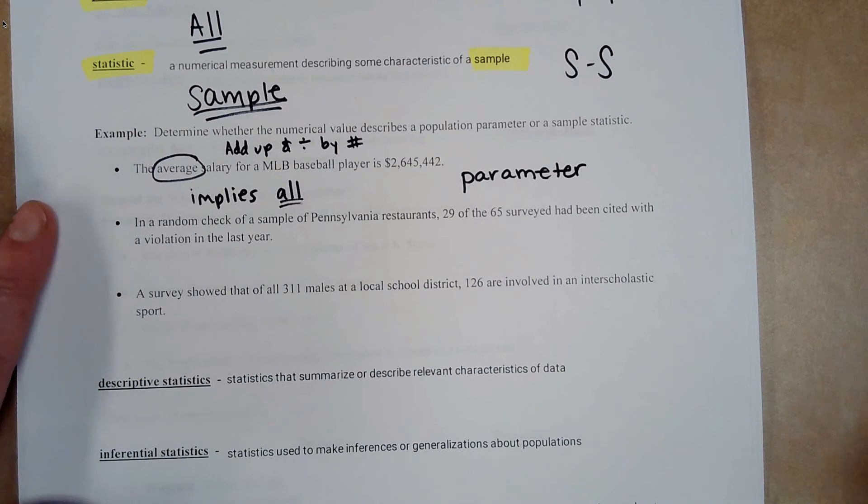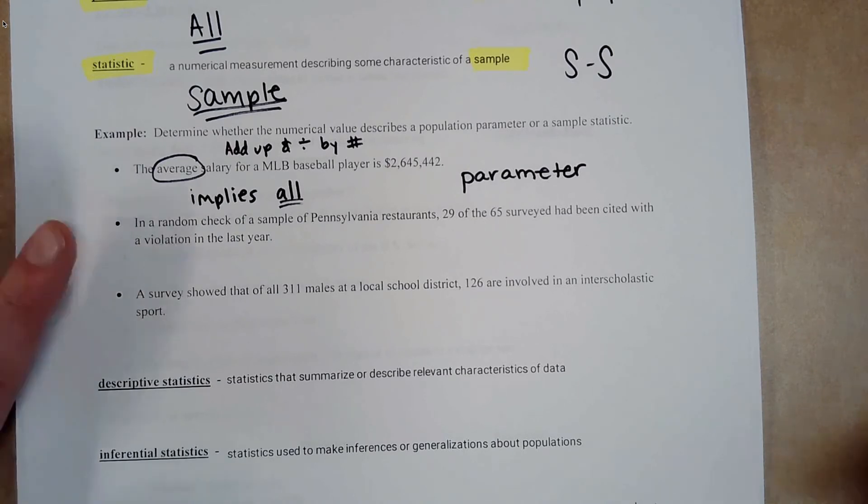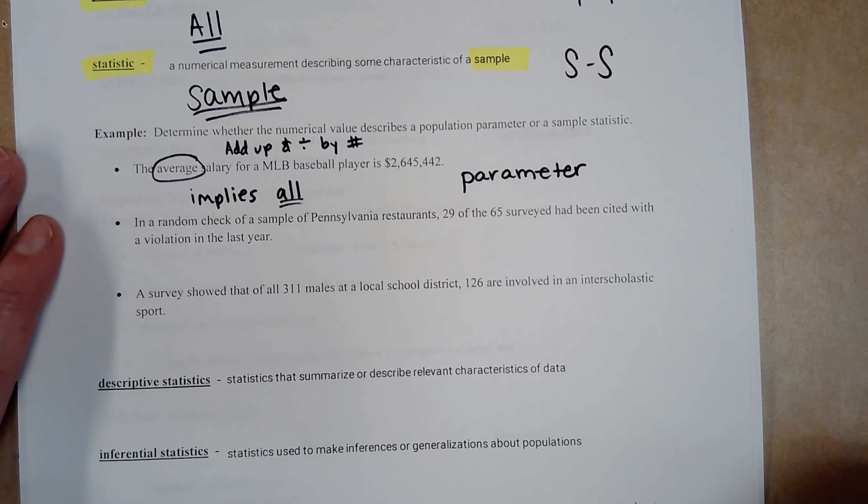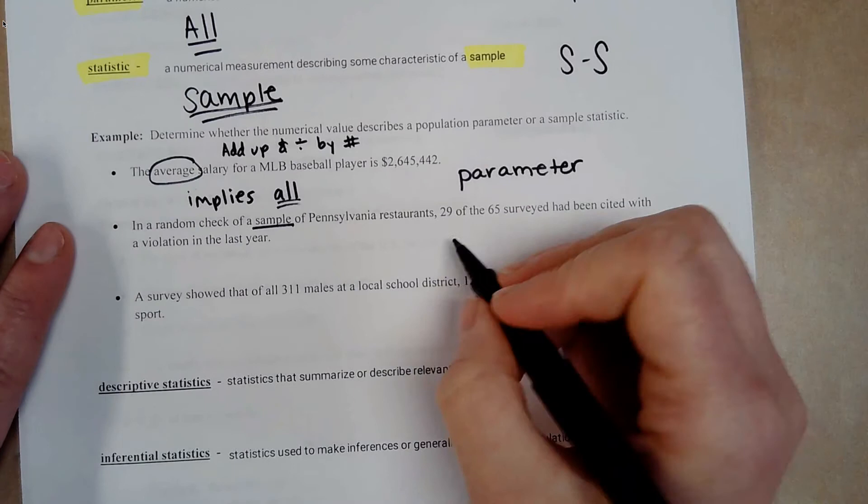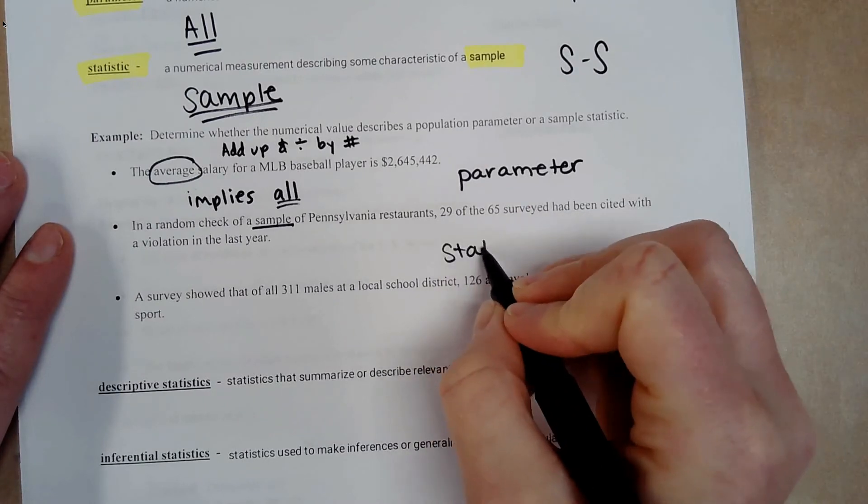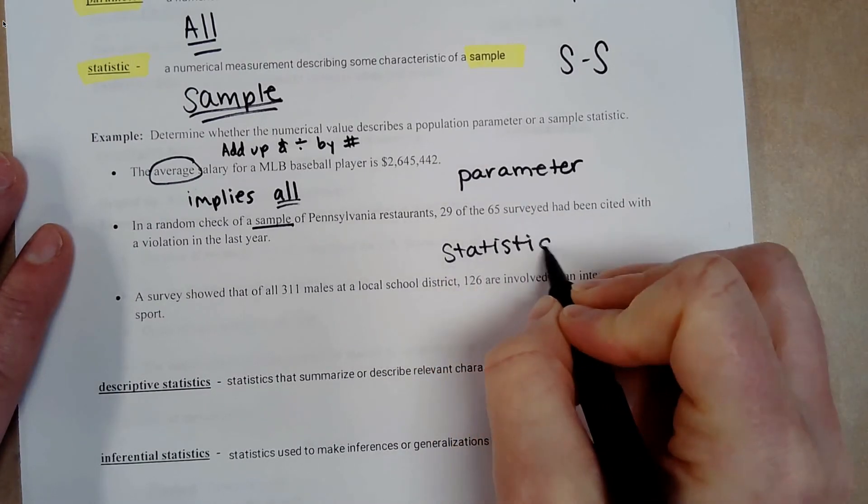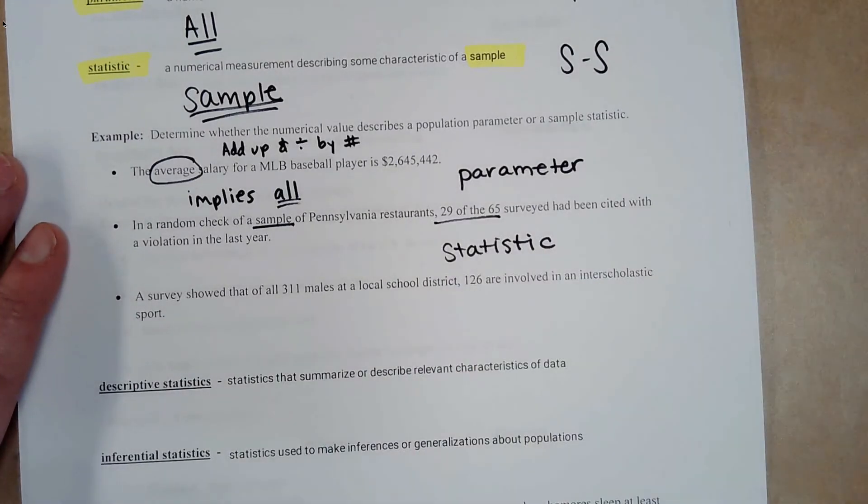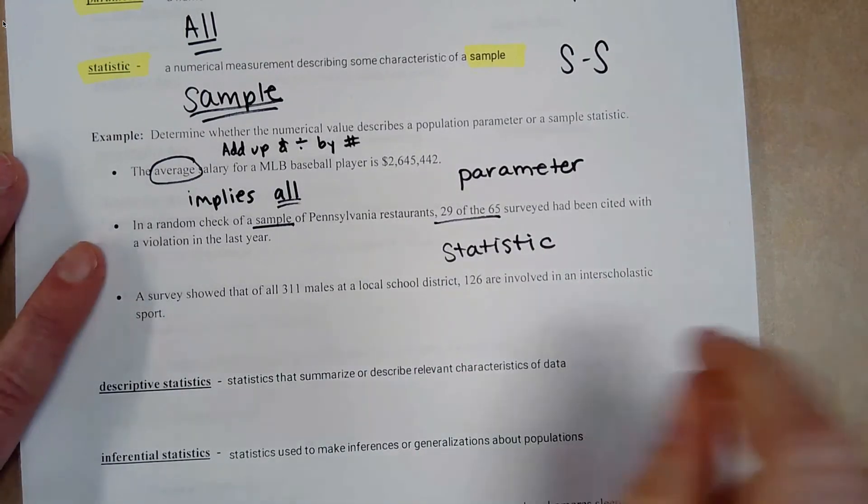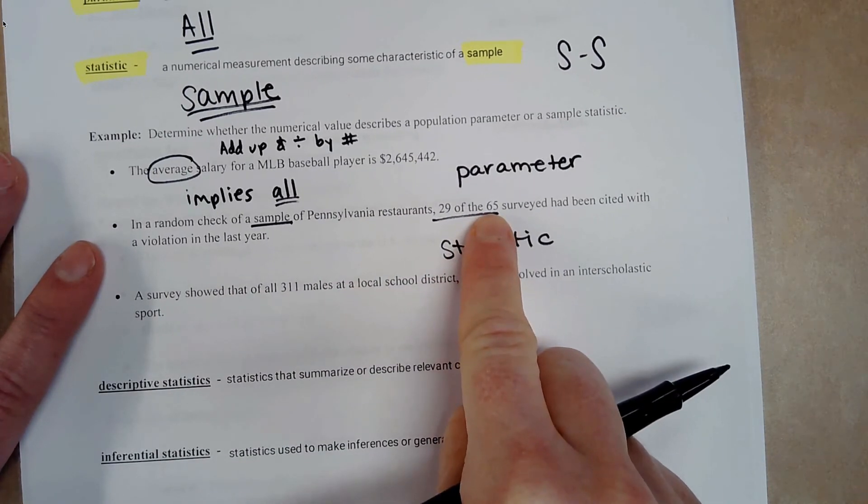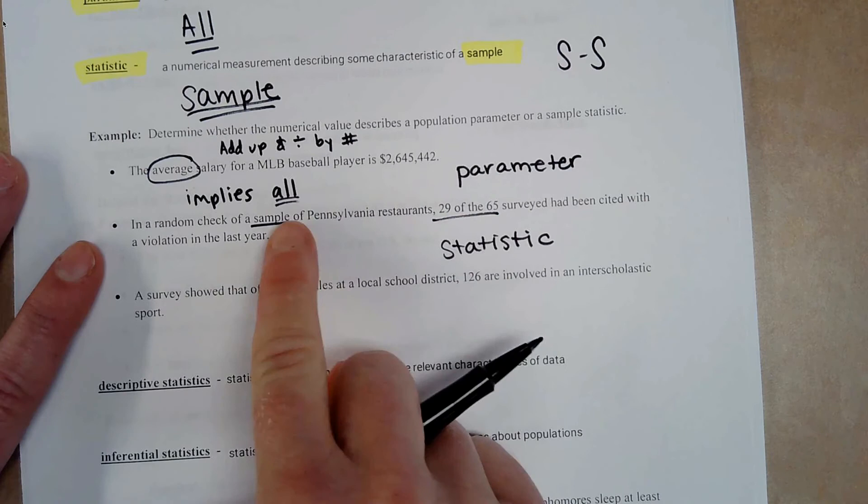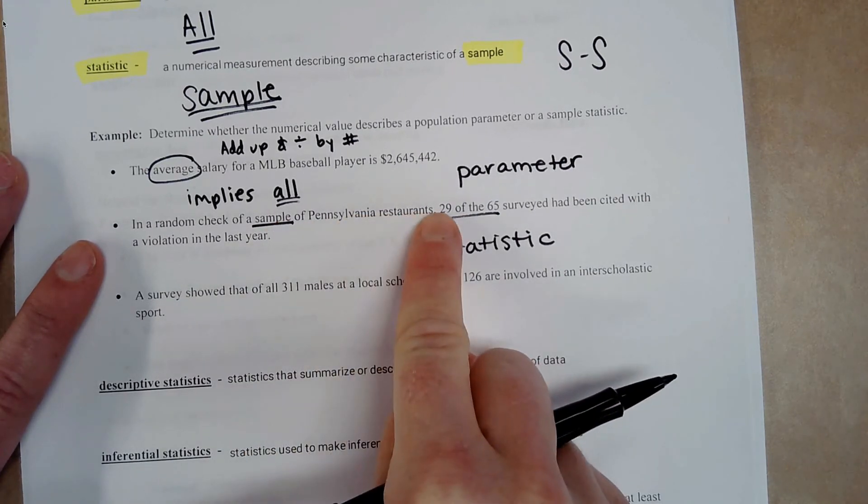In a random check of a sample of Pennsylvania restaurants, 29 out of the 65 surveyed have been cited with a violation last year. So we have that word sample in there. Then that means this is a statistic. 29 out of the 65. It's saying Pennsylvania restaurants. There's no way there's only 65 Pennsylvania restaurants.